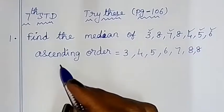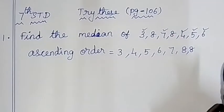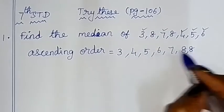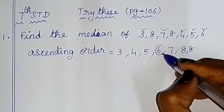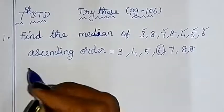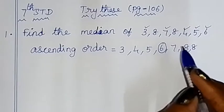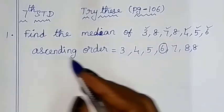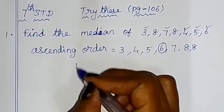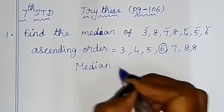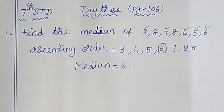The middle term is the median. So the median is 6. We can also use a formula to solve this.